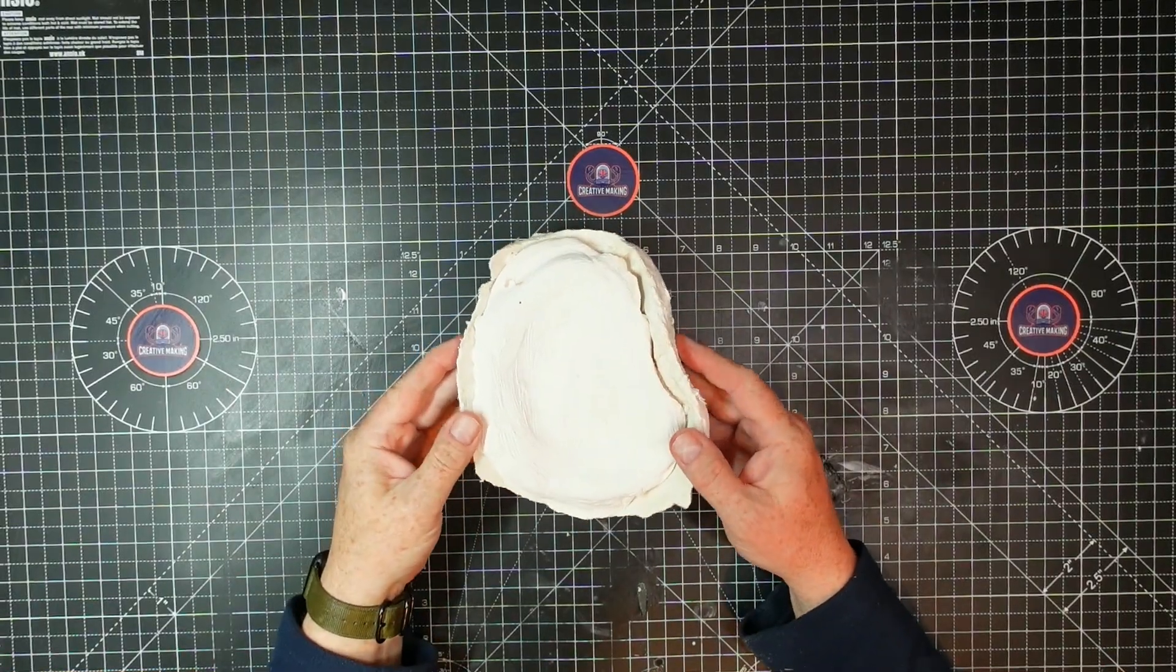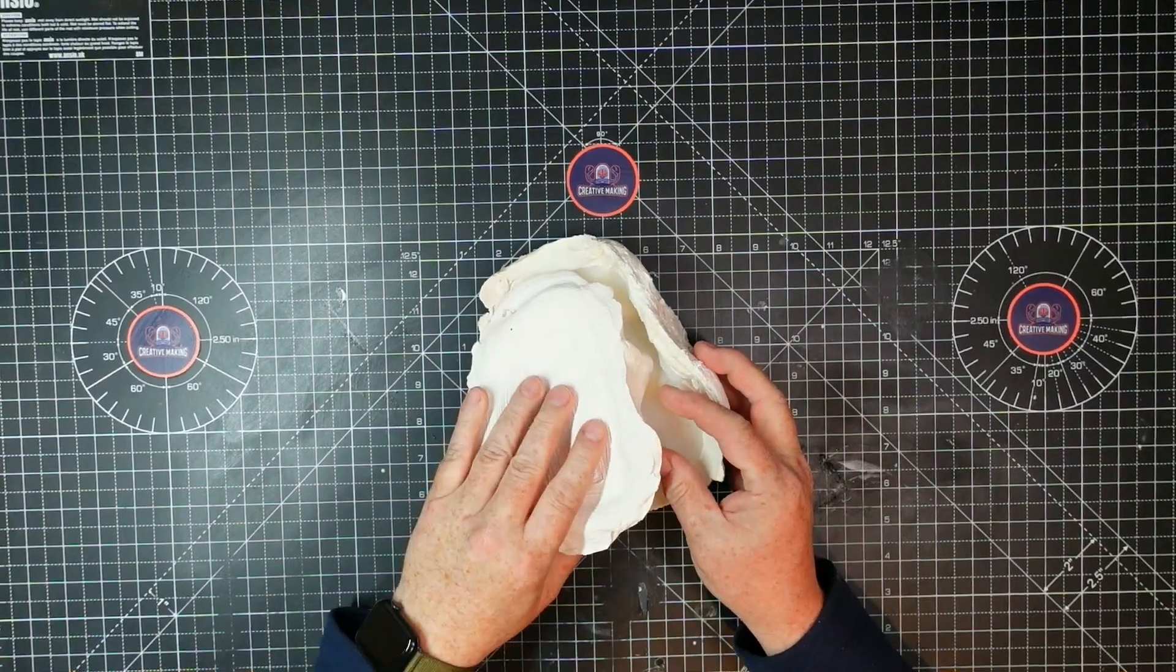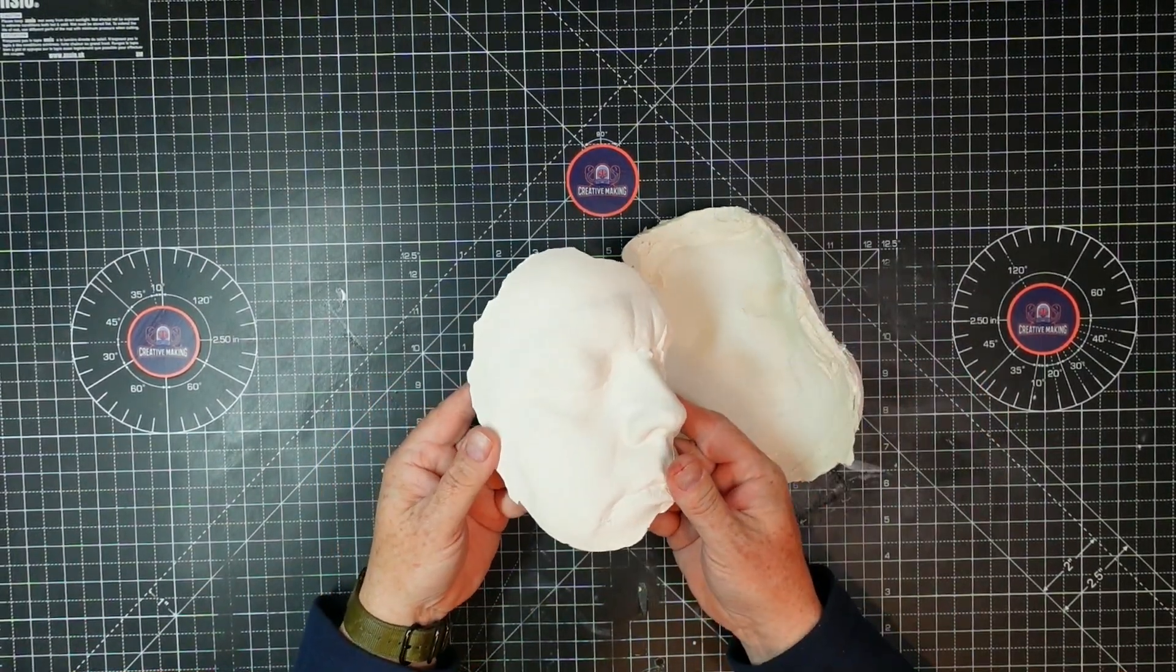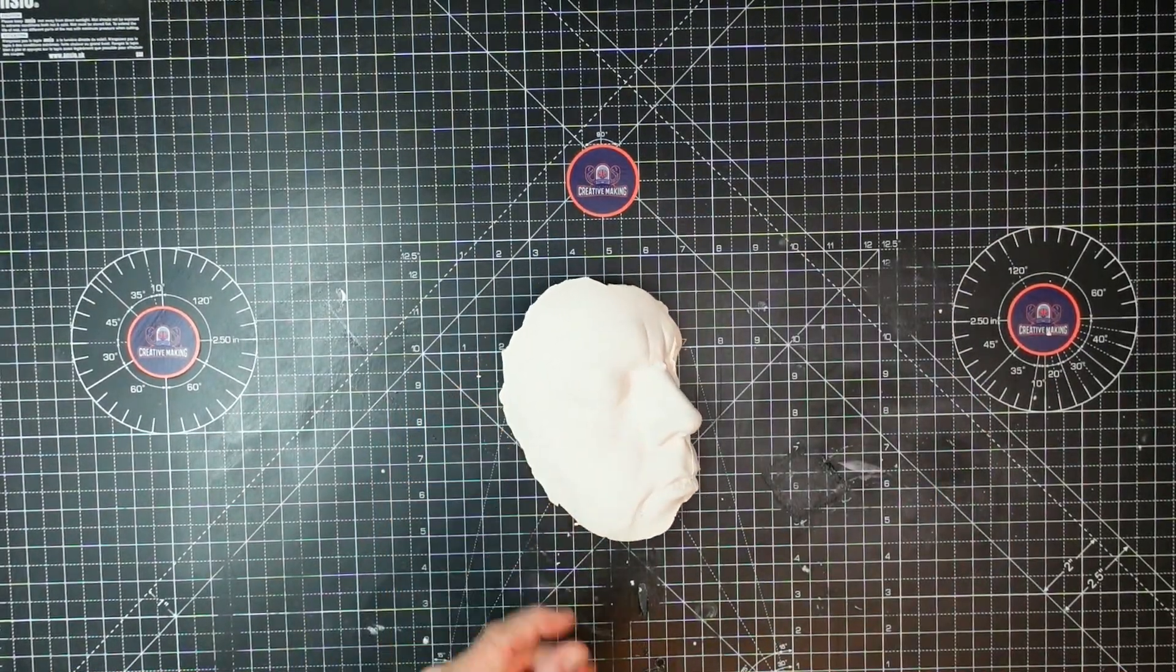Hi everybody, welcome back to part two of this four part series. In the first video we made this snap mould, and from that snap mould we've got a rough plaster cast of that side of my face. Let's have a look what we do next. Enjoy!